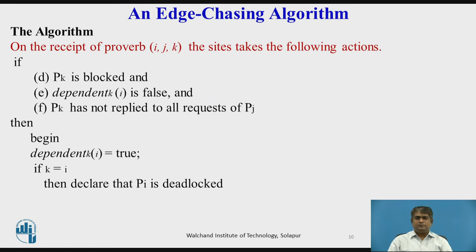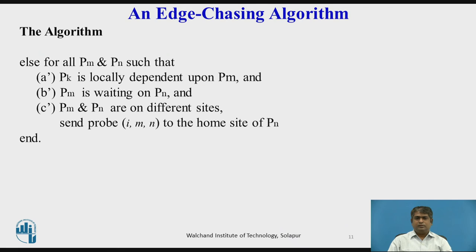On receipt of probe IJK, the site takes the following actions. If PK is blocked, dependent[K][K] is false, and PK has not replied to all requests of PJ, then set dependent[K][K] to true. If K equals I, declare that PI is deadlocked. Else, for all PM and PN such that PK is locally dependent upon PM, PM is waiting on PN, and PM and PN are on different sites, send probe IMN to the home site of PN.